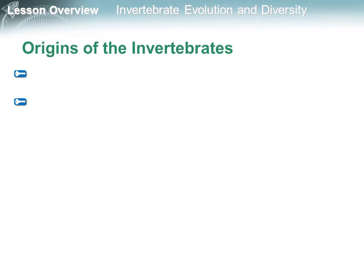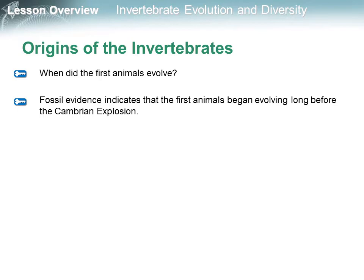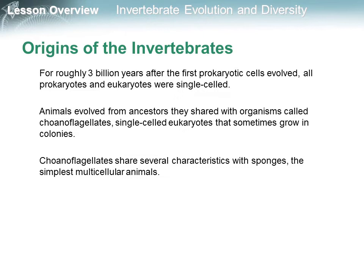Now let's see the origins of the Invertebrates. In our discussion, we will try to answer when did the first animals evolve. Generally, fossil evidence indicates that the first animals began evolving long before the Cambrian explosion. For roughly 3 billion years after the first prokaryotic cells evolved, all prokaryotes and eukaryotes were single-celled. Animals evolved from ancestors they shared with organisms called choanoflagellates, single-celled eukaryotes that sometimes grow in colonies.